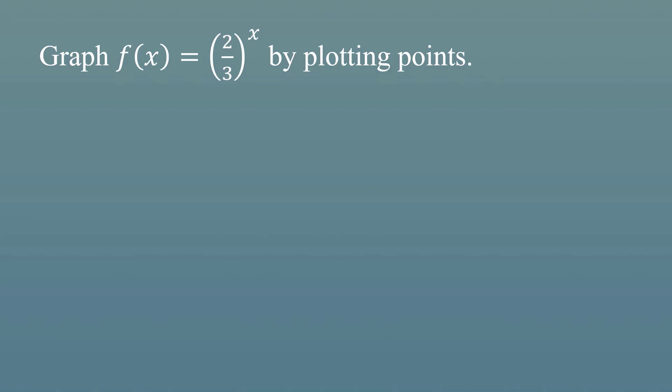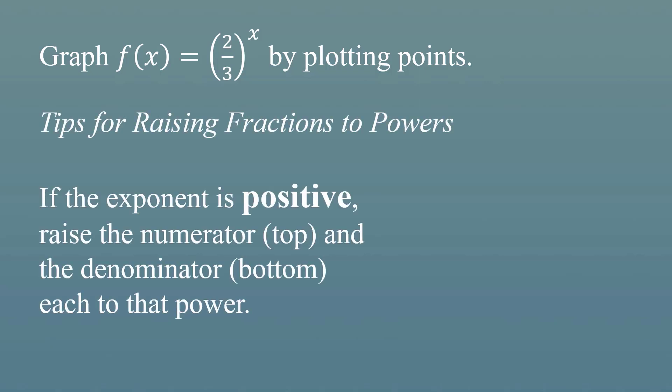First, this is going to involve raising a fraction to powers. So here are a couple of tips. If the power is positive, we're going to raise both the numerator and the denominator of the fraction to that power. For example, to raise two-thirds to the power of three is the same as taking two to the third over three to the third. Raising two to the third power means multiplying two times two times two, which is going to give you eight. And raising three to the third power will give you 27. So two-thirds to the third power is 8 27ths.